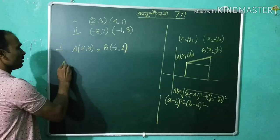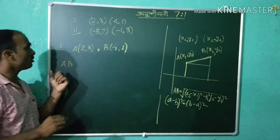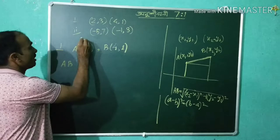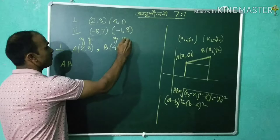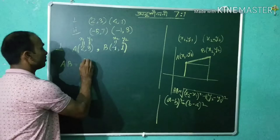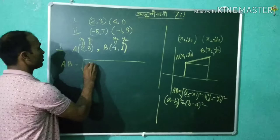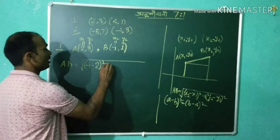AB means the distance from A to B. Here x1 is equal to 2, y1 is equal to 3, x2 is equal to 4, and y2 is equal to 1. We will apply the distance formula.